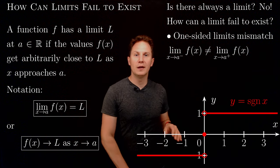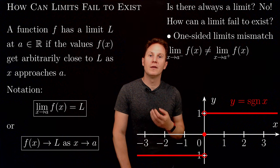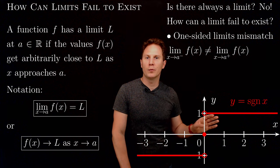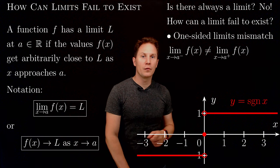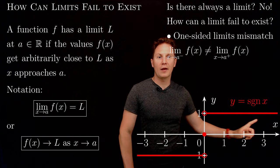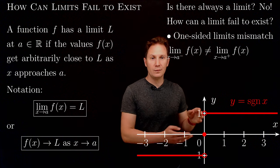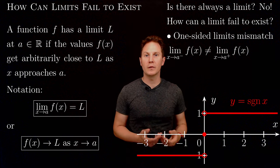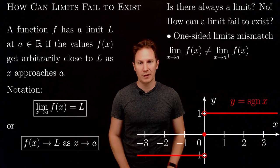Here is an example. The graph of the signum function outputs the sign of x: for negative x it outputs negative 1, for positive x it outputs positive 1, and for 0 it outputs 0. As x approaches 0 from the left, the left-hand limit is negative 1, whereas approaching 0 from the right gives a right-hand limit of positive 1. The one-sided limits do not match — there is a sudden discrete jump at x equals 0 — hence the limit as x approaches 0 does not exist.